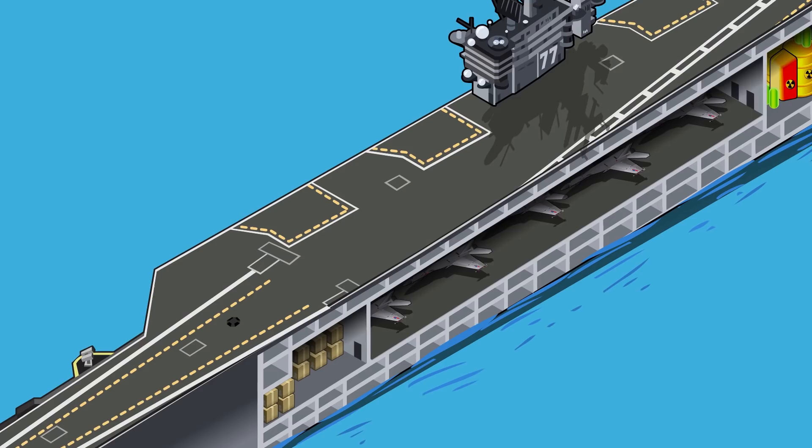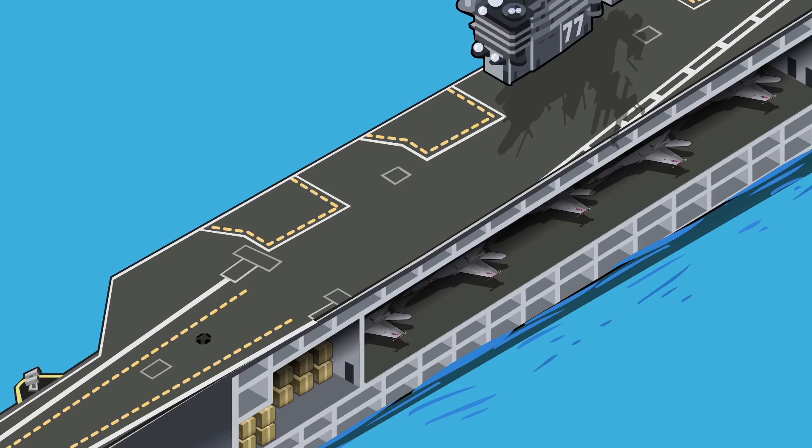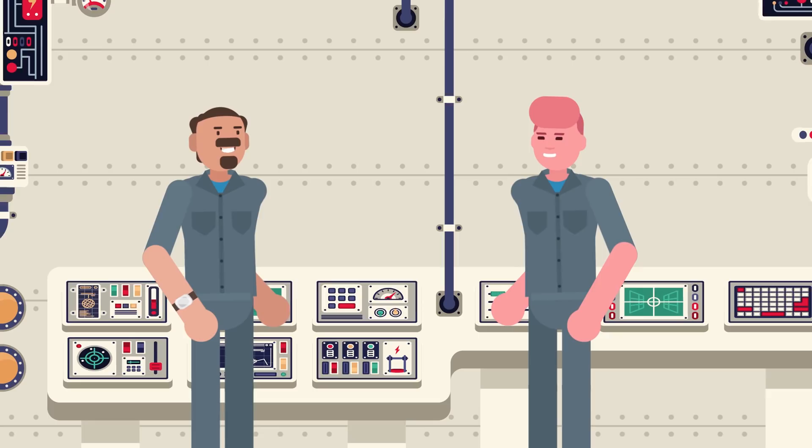As the Village People famously crooned, you can indeed sail the seven seas in the Navy, but as soon as you get on board the carrier, you very quickly realize that you're going to be seeing very little of any sea.